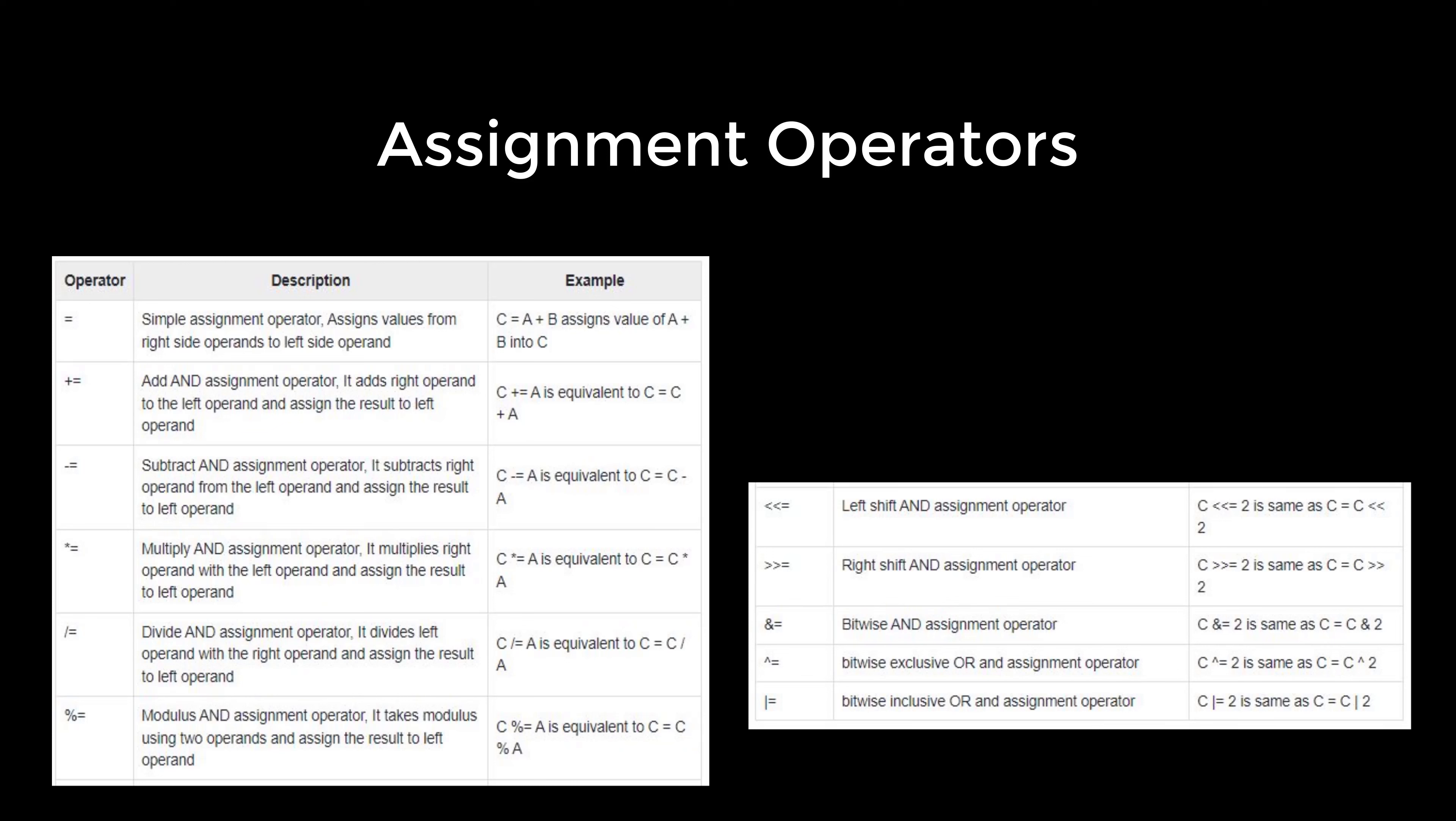How about assignment operators? There are the following assignment operators supported by C-Sharp. These include equals, and the add AND assignment operator. It adds right operand to the left operand and assigns the result to left operand. You can learn more by practicing or by trying and playing with these kind of operators.